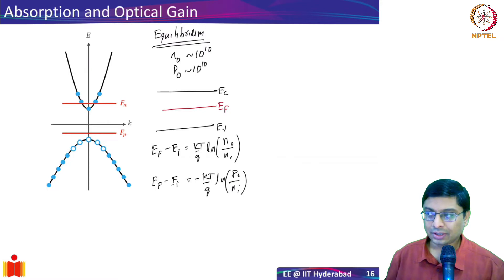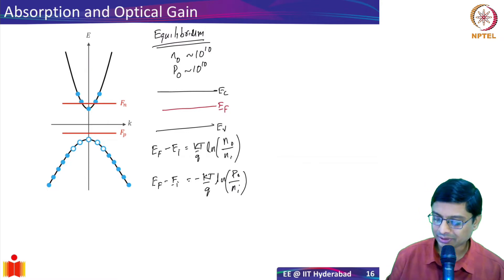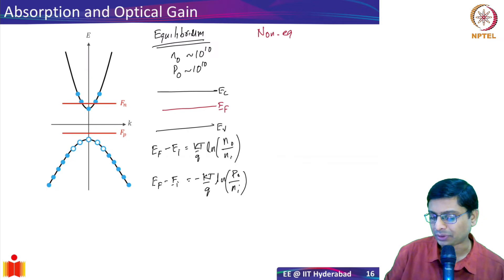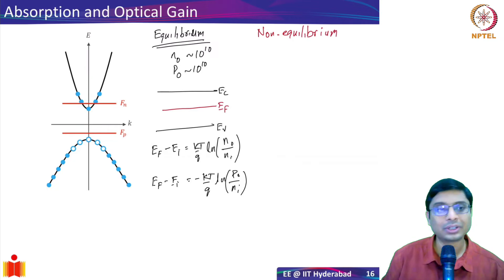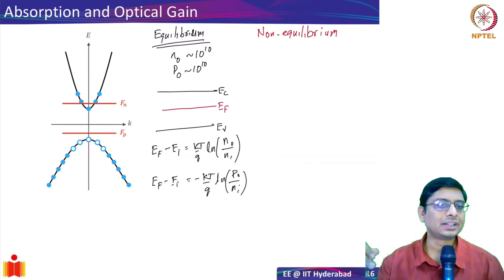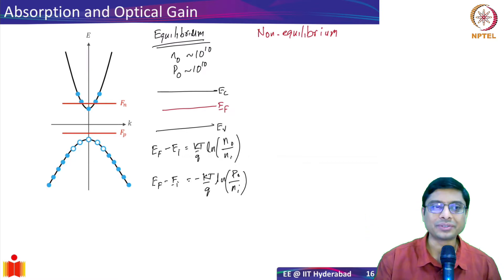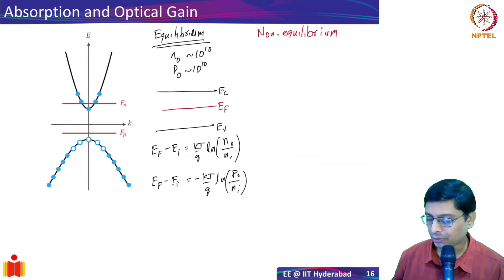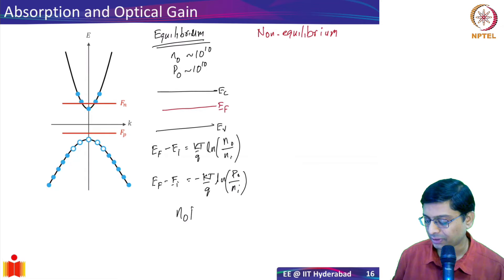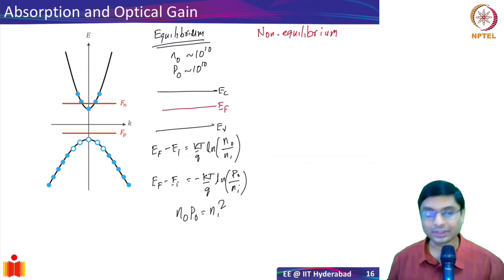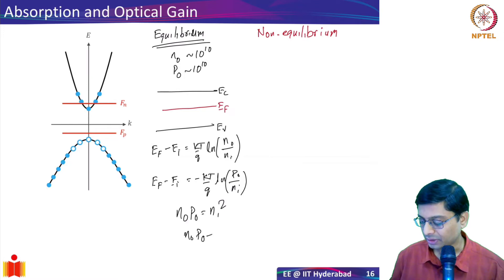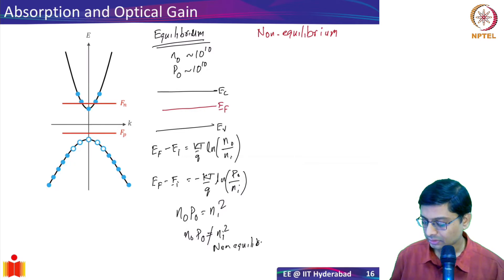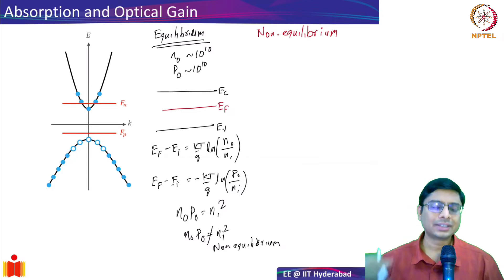Now suppose I create a non-equilibrium situation. I can pump it with photons or inject current from both sides so that electrons and holes coexist in the same region. Non-equilibrium essentially means the law of mass action is not satisfied: n₀·p₀ ≠ ni². When this is violated you are out of equilibrium. If you stop the excitation, the semiconductor returns to equilibrium.